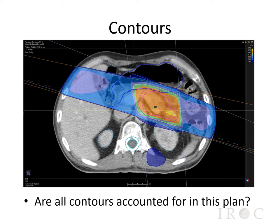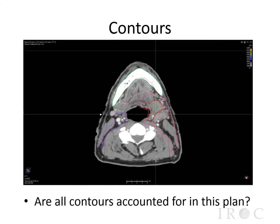Let's look at this particular case together. The first question to ask is: are all of the contours accounted for in this plan, and if not, can you identify what's missing? You may have been able to identify that the liver has not yet been contoured on this case, even though there is dose entering and exiting through the structure. Now let's look at a head and neck case — the spinal cord has not yet been contoured, and given its proximity to all of the target structures, it could receive significant dose and needs to be taken into account when planning.